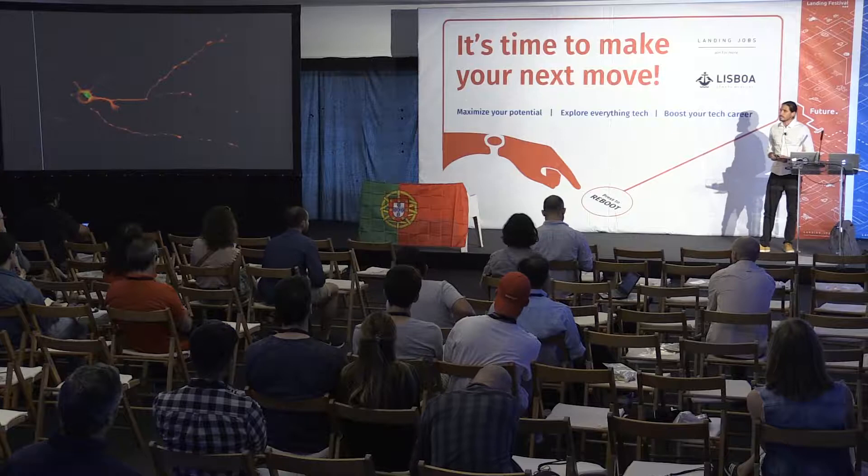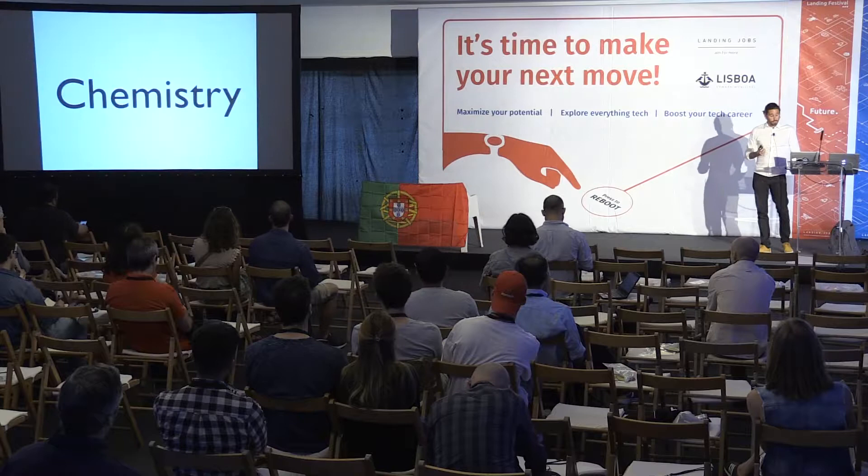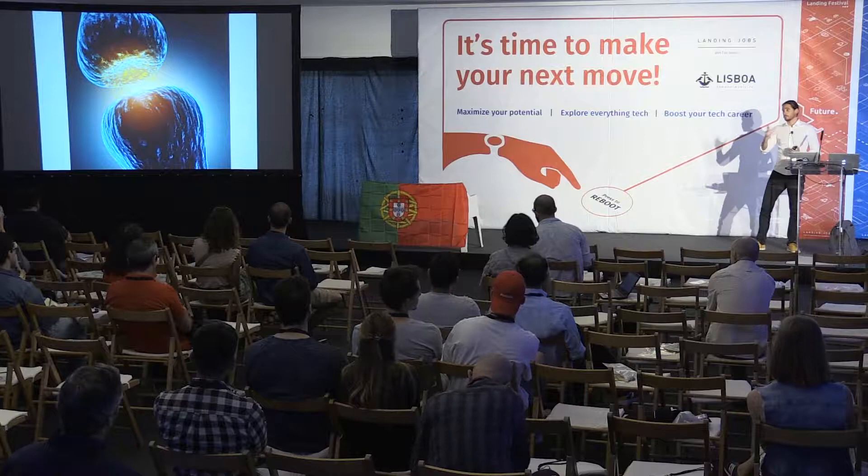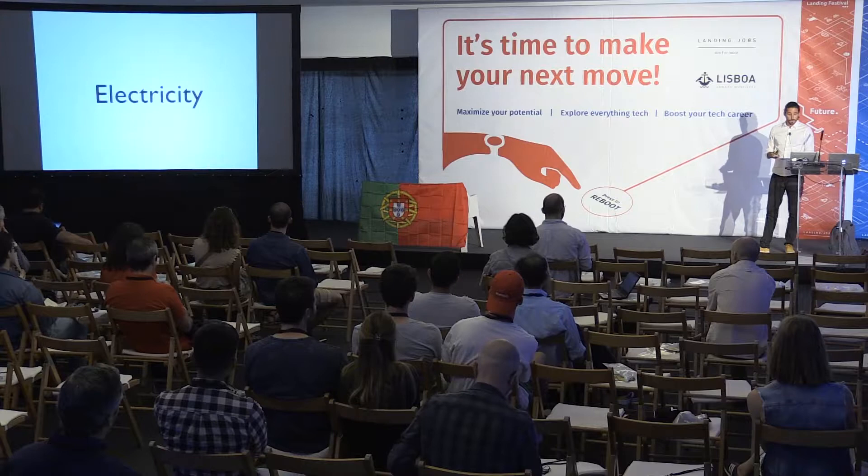The biology layer: everyone knows that the cell, the neuron, is the biological fundamental unit of the brain. Then you have the chemistry layer, so you have neurotransmitters that go through one neuron to another neuron, so the communication can go through in the brain.